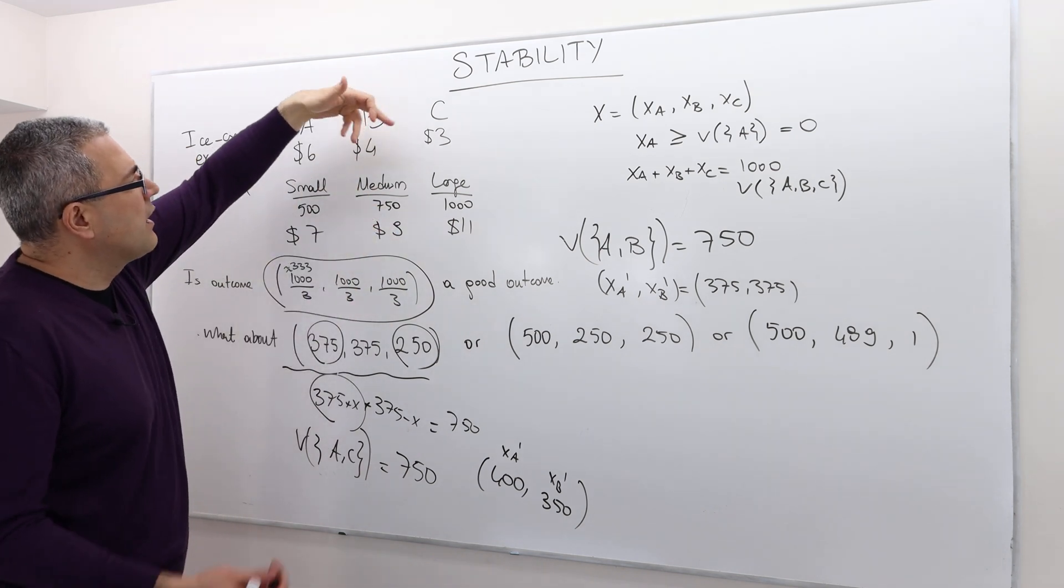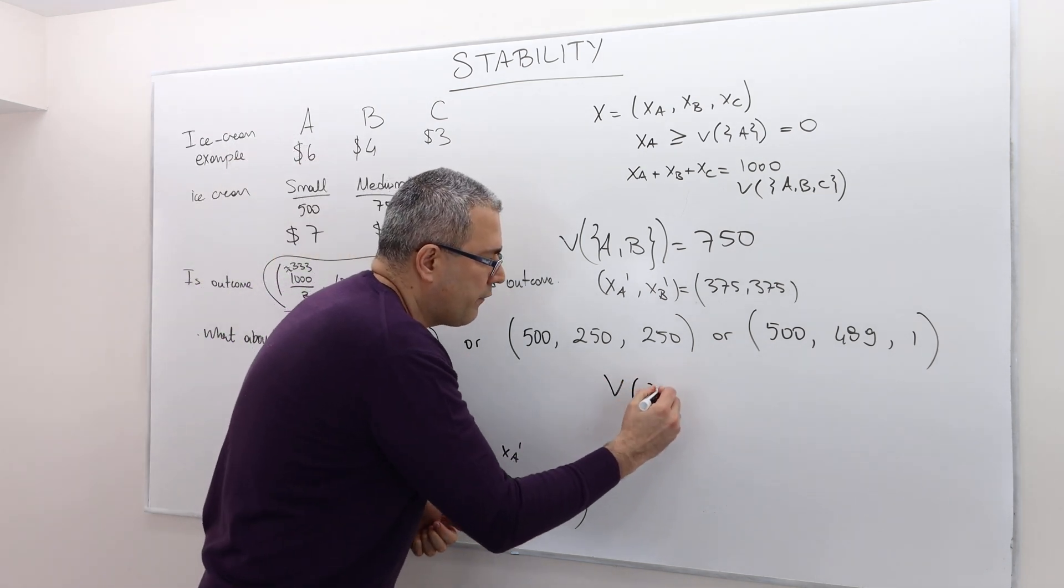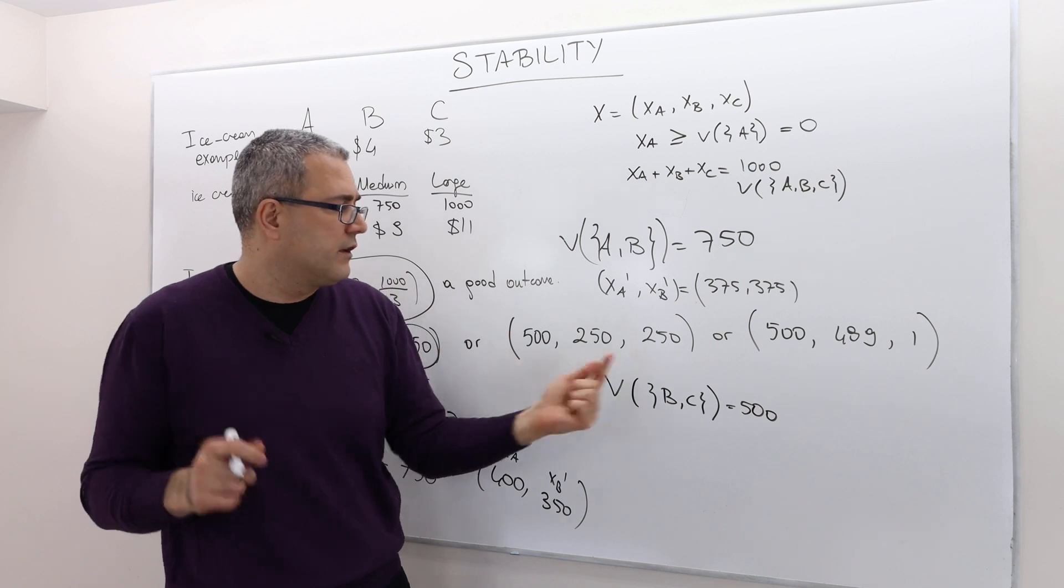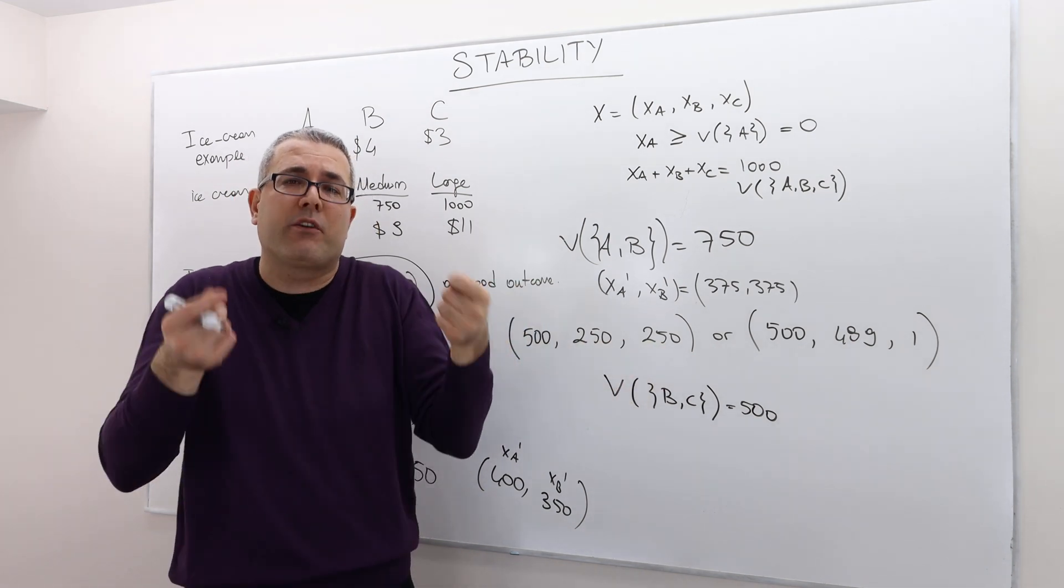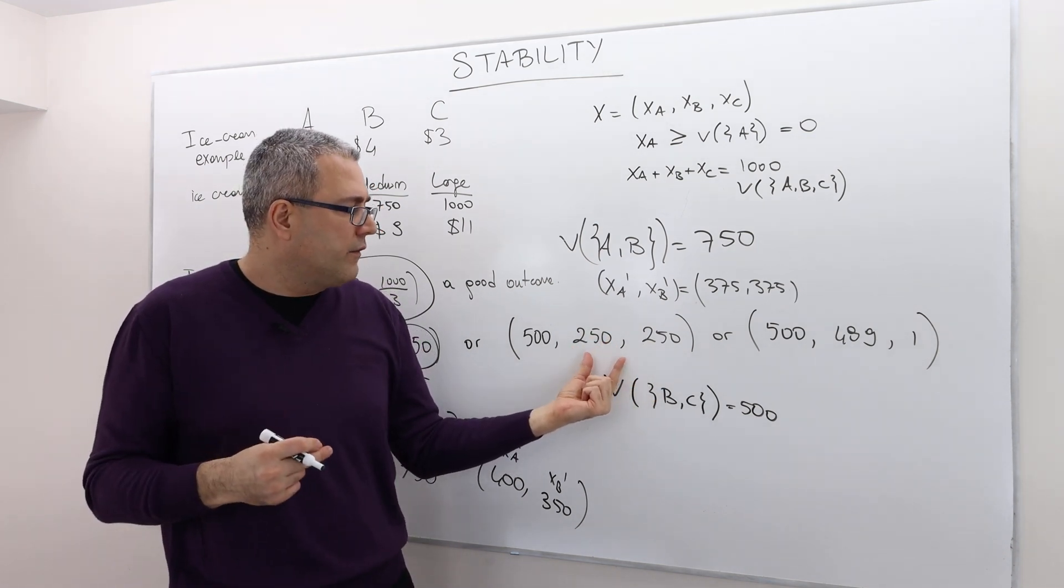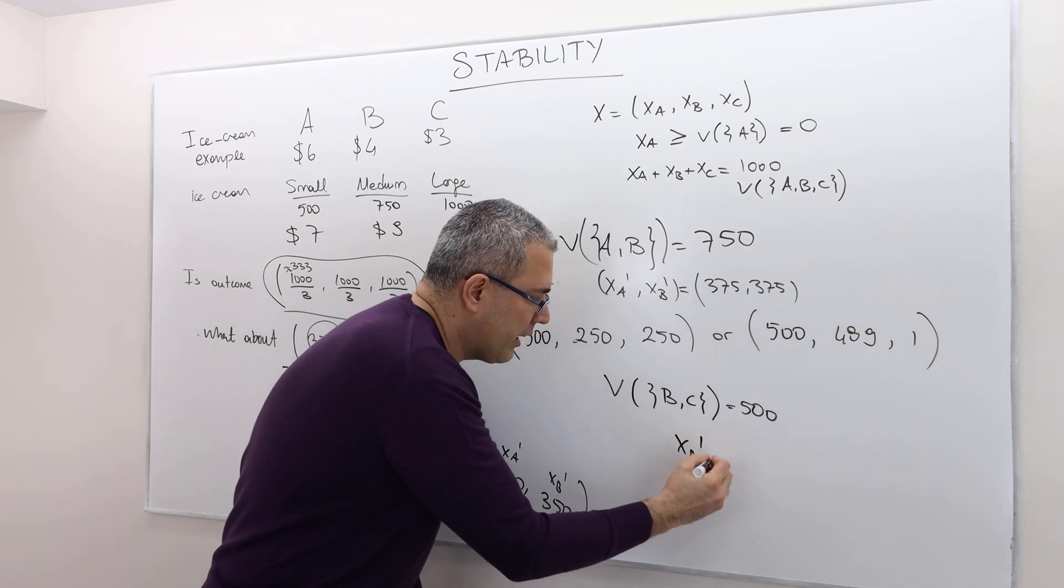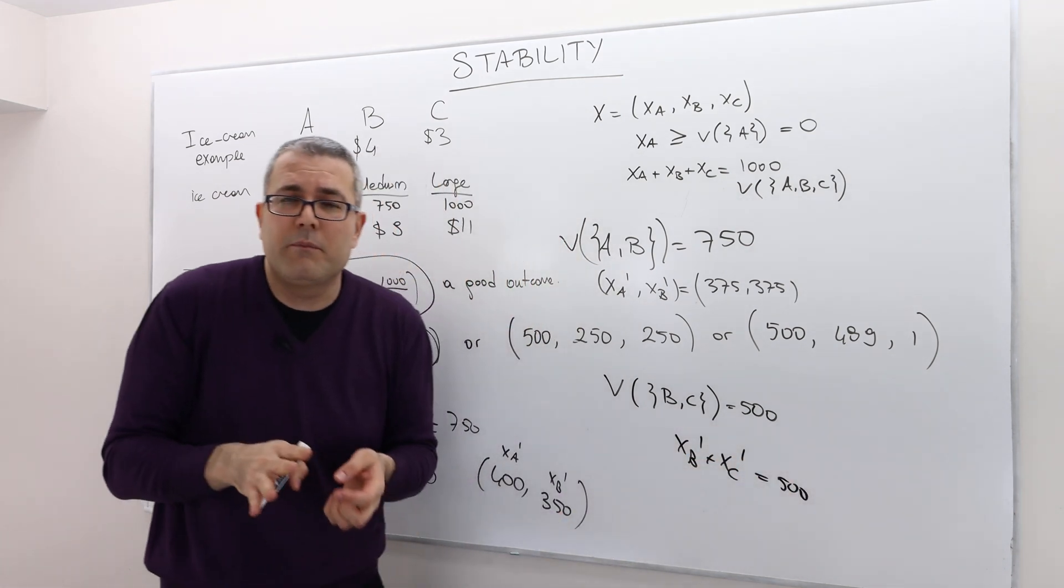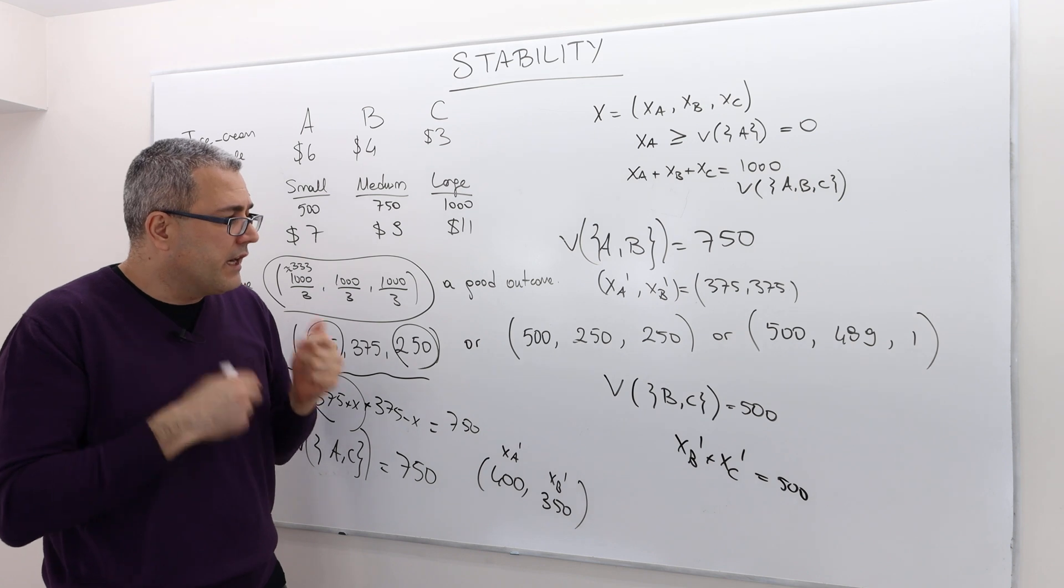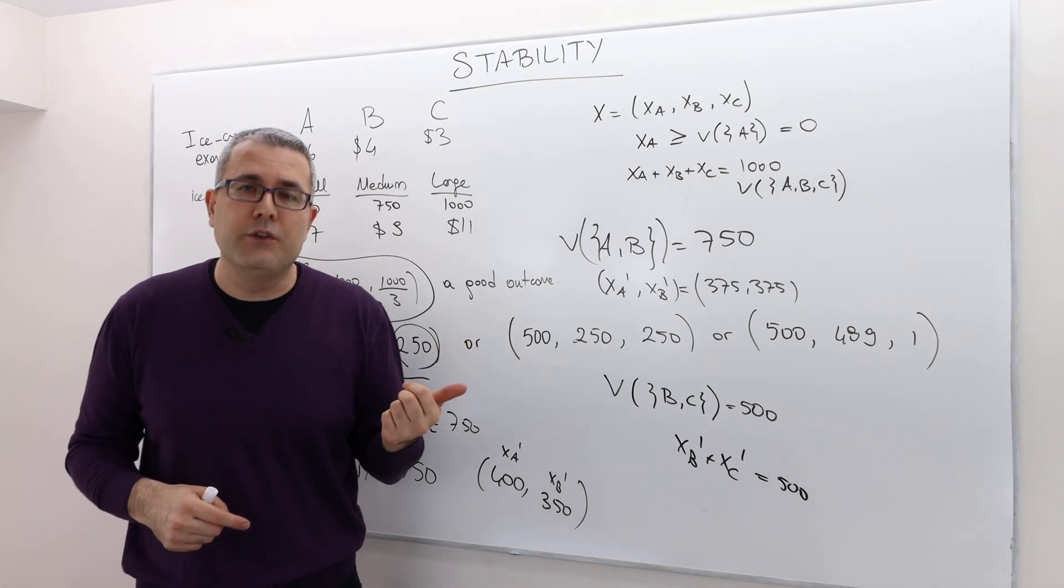And the thing is, when agent A and B kick C, they cannot split it in a different way that will increase both agents' payoff. So therefore, agent A and B has no incentive to deviate and form their own coalition. Same for agent A and C. What about agent B and C? We didn't really think about this. But if agent B and C kick out agent A, B and C, they can collect $7, which means small ice cream, so 500 grams, so the value, the worth of a coalition B and C is 500. So the question is, is there a way of splitting this 500 between these two players so that both of them can get better off? Impossible. Because $250, $250 adds up to $500. So if you want to increase one guy's payoff, well, you have to decrease the other guy's payoff because, once again, XB prime plus XC prime must be exactly equal to 500. Remember? You can't consume more than what you can afford, which is 500 grams. So therefore, this coalition is actually stable. So it sounds like a good outcome.